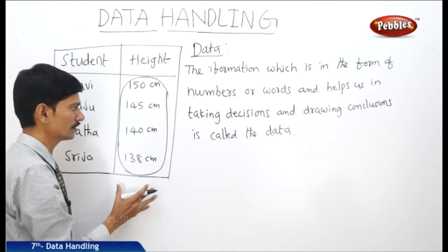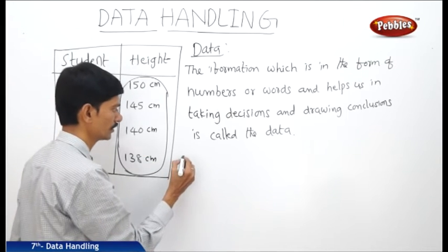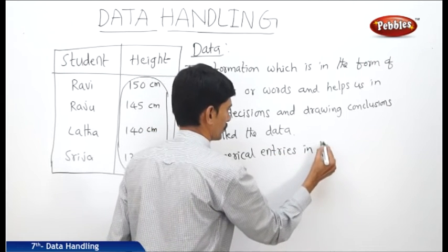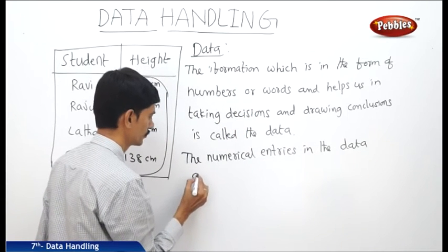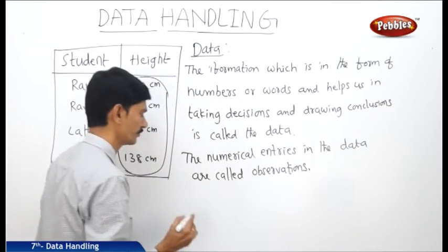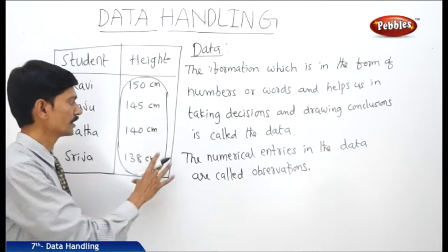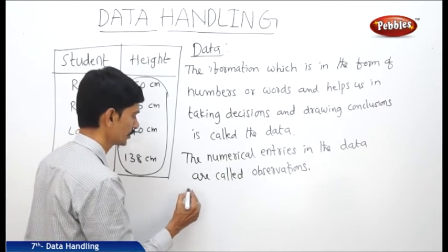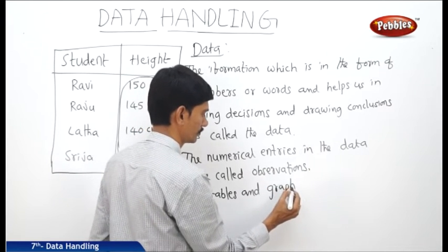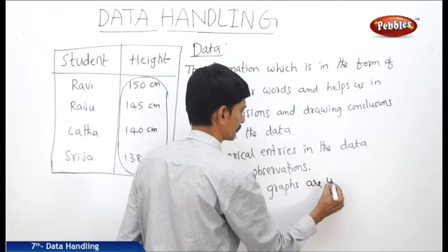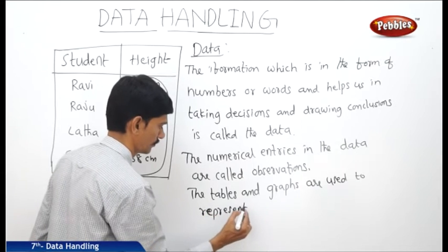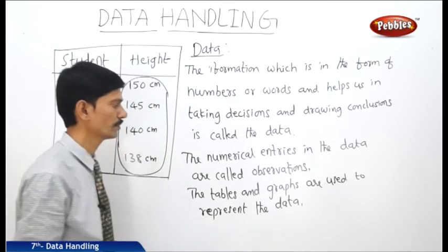The numerical entries in the data — 150 centimeters, 145 centimeters, 140 centimeters, 138 centimeters — are called observations. The numerical entries in the data are called observations. We can represent any data in the form of tables or graphs. Tables and graphs are used to represent the data.